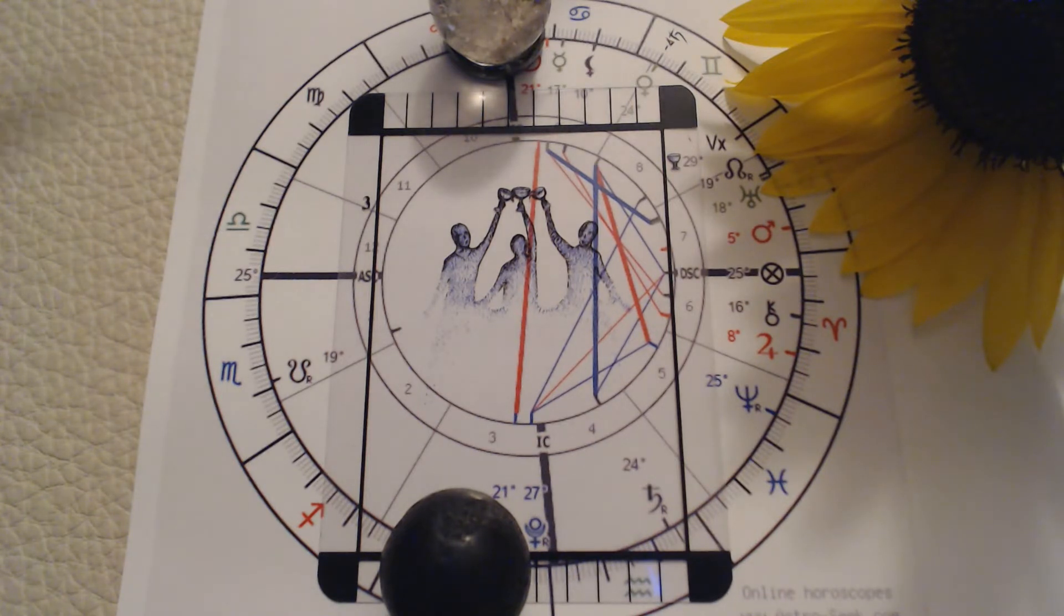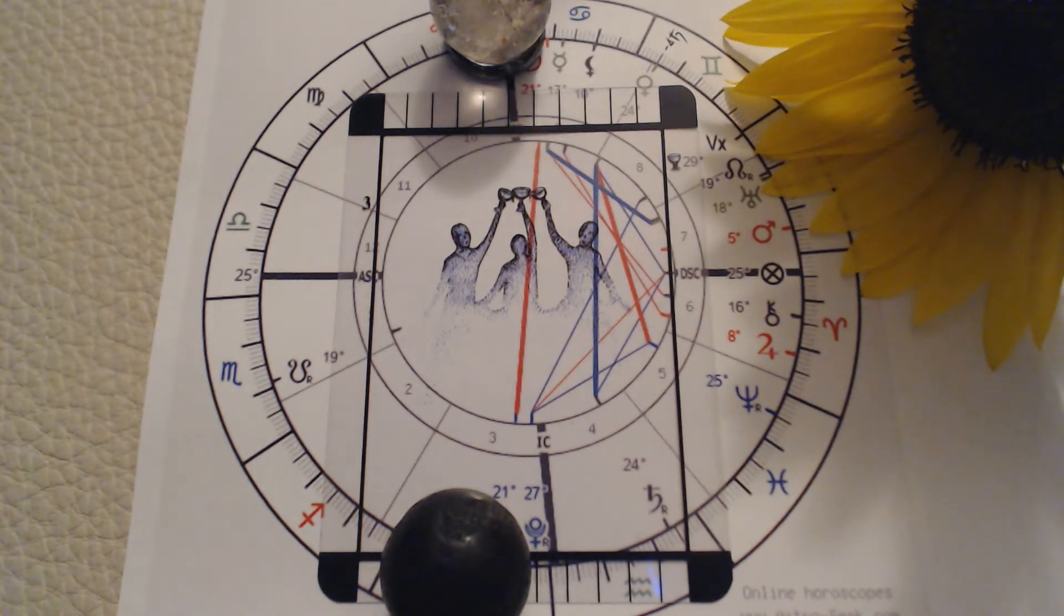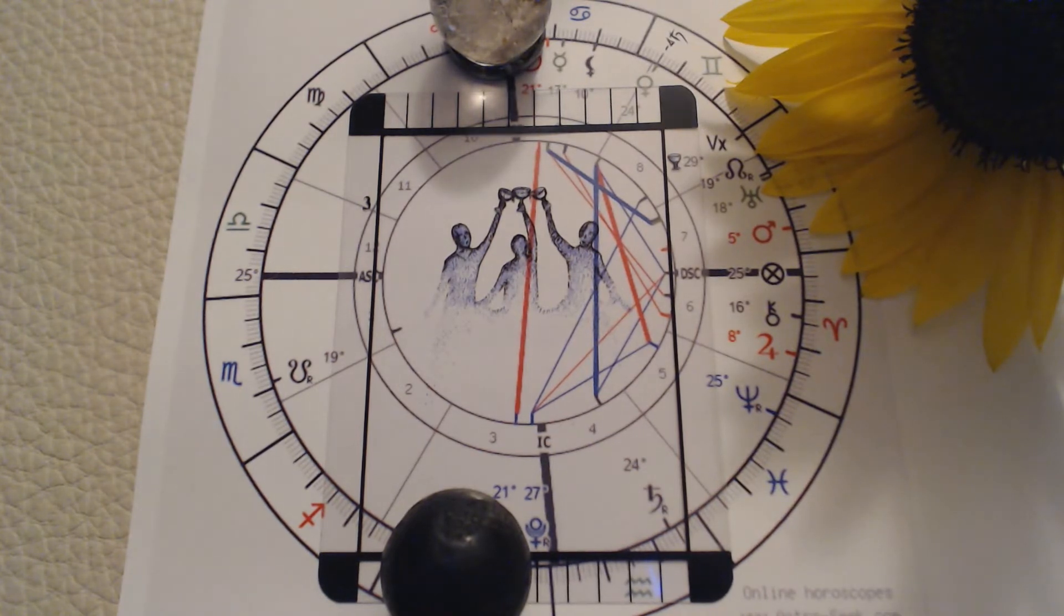And Mercury is making a sextile to Uranus. I don't want to talk about Uranus right now because I'm having issues with Uranus and I might be a little biased in my opinion.